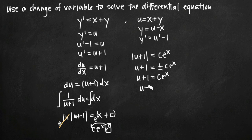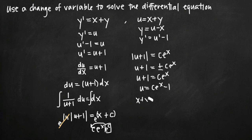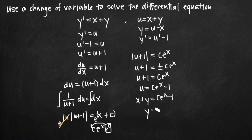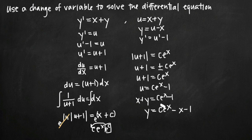If we subtract 1 from both sides, we have an equation for u, and we can back substitute x plus y for u. So we plug x plus y in for u and we get c e to the x minus 1. Now we want to solve this for y — that's always been the goal. So we subtract x from both sides and we get y equals c e to the x minus x minus 1. We don't have an initial condition, so we can't solve for c and just leave it as a placeholder constant. This is our final equation: y equals c e to the x minus x minus 1.